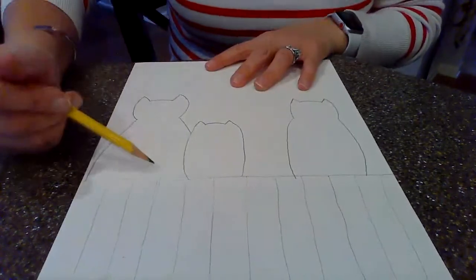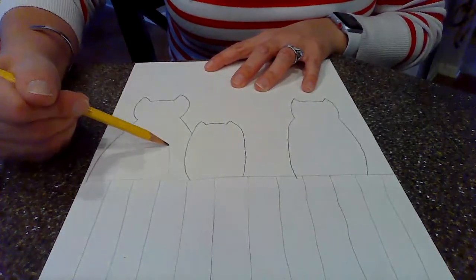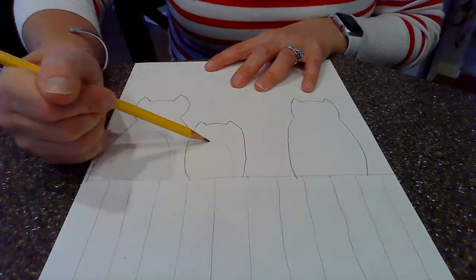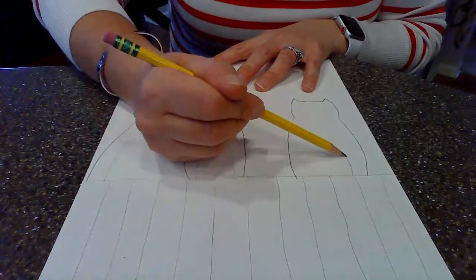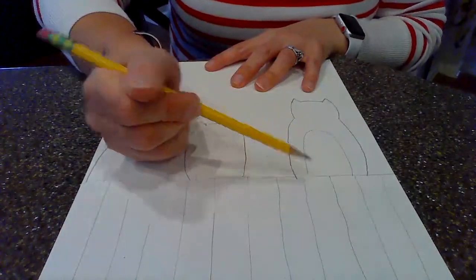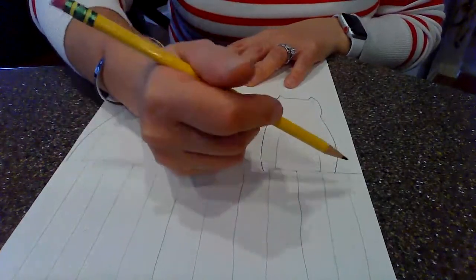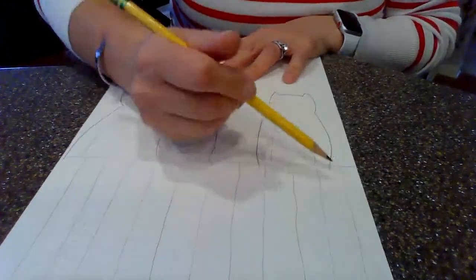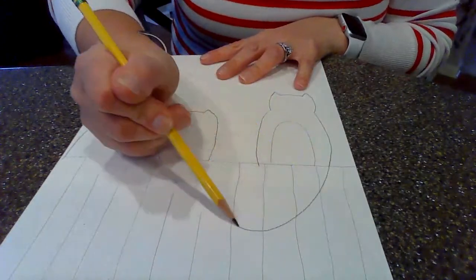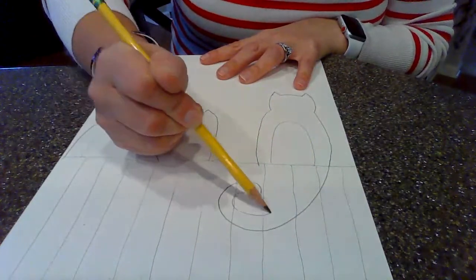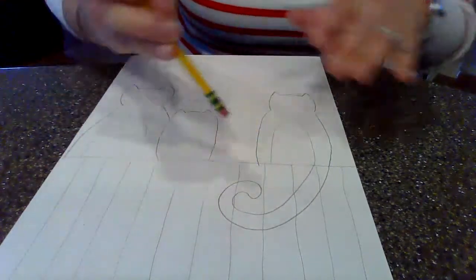So from there, we're going to give our cats a belly, just a little spot for the belly. And I'm drawing lightly just in case I want to erase something. And then I'm going to go ahead and add a kitty cat tail.